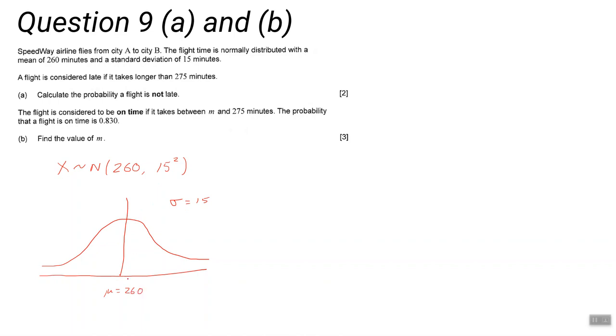A flight is considered late if it takes longer than 275 minutes. So 275 is greater than 260, so we'll put a line here for 275, and that's our X value. It says calculate the probability flight is not late, so it's late if it takes longer than 275 minutes and we're trying to calculate that it's not late. So we want the probability it takes less than 275 minutes, so that's that probability there. You do all that, it should be fairly straightforward to get the answer. That's part A.